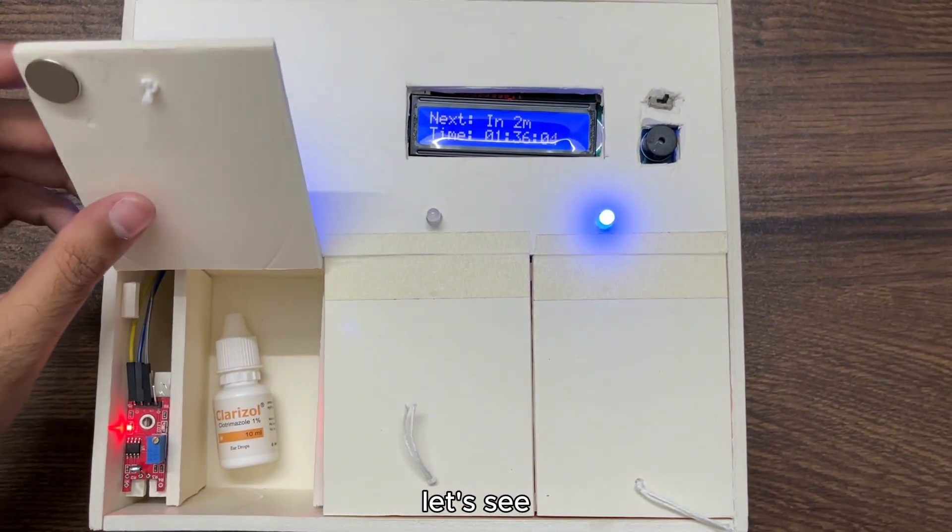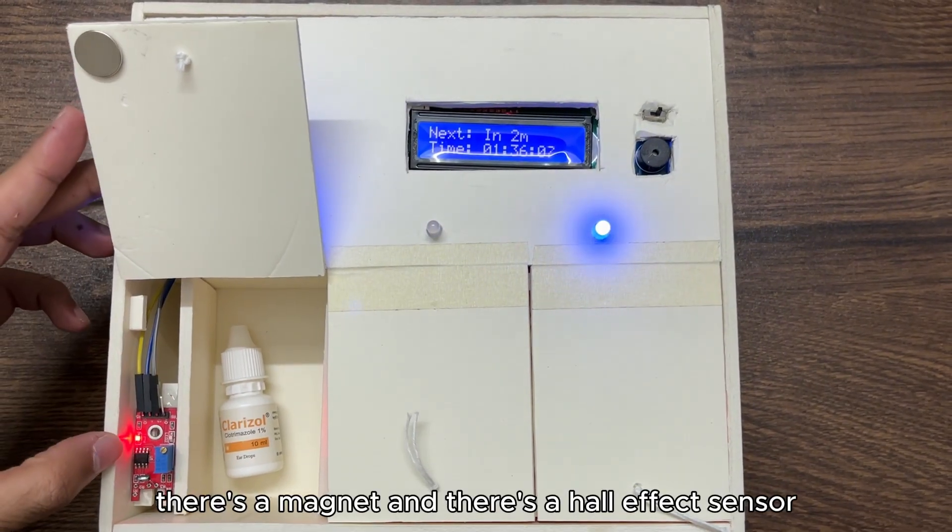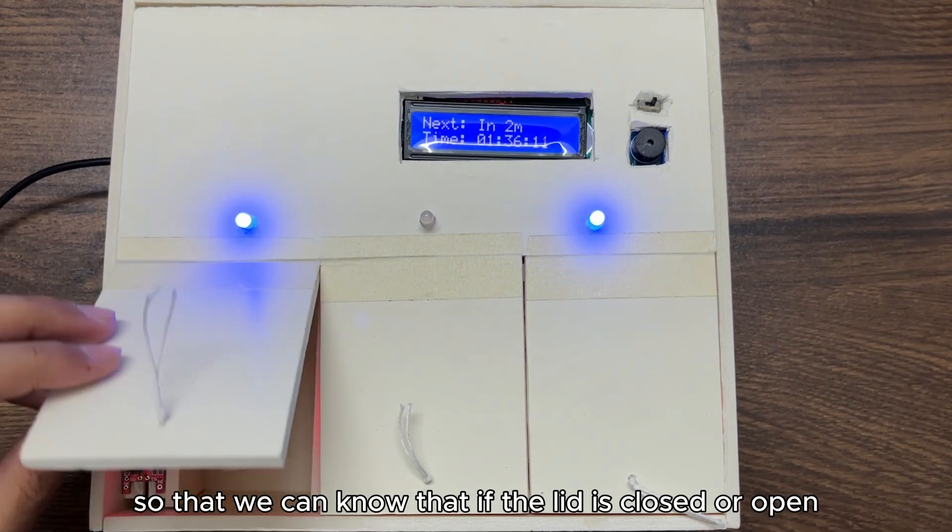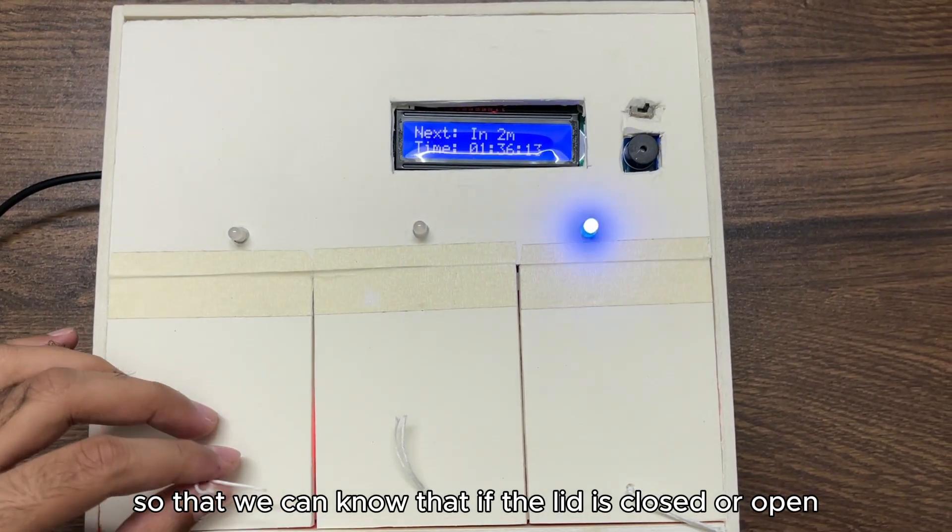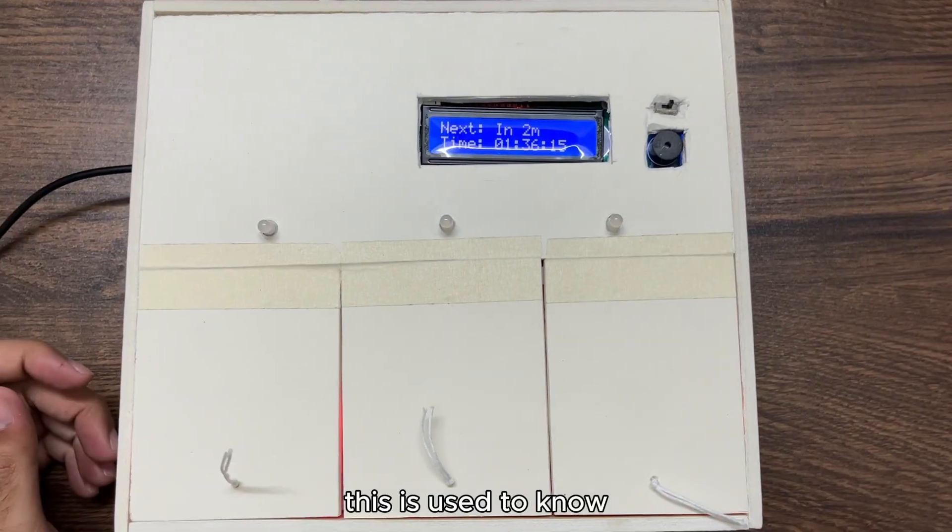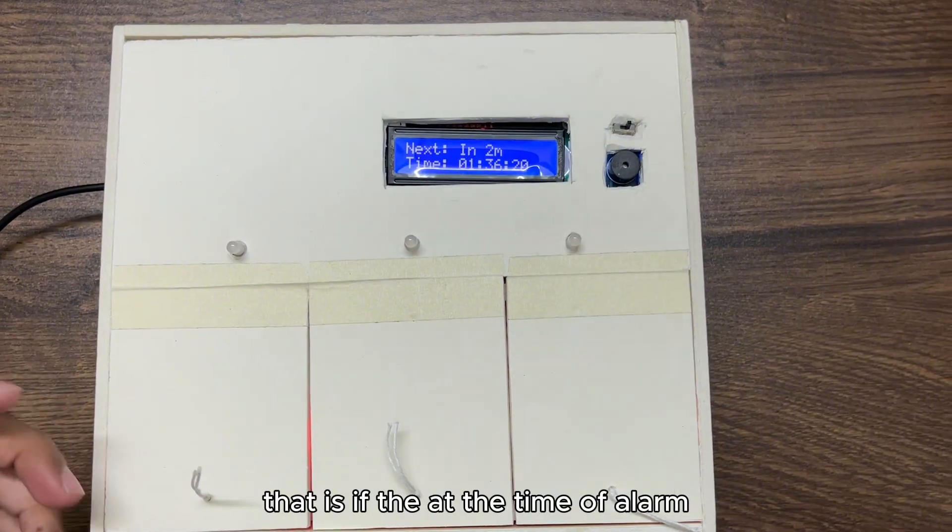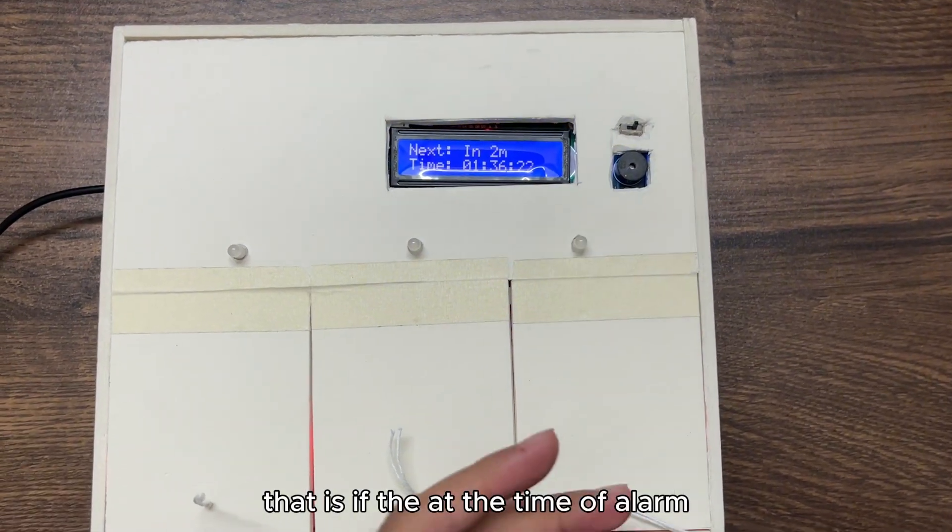In the meantime, there's a magnet and there's a hall effect sensor. These things are used so that we can know if the lid is closed or open to register. This is also used to know, to register, if the user has taken medicine or not.